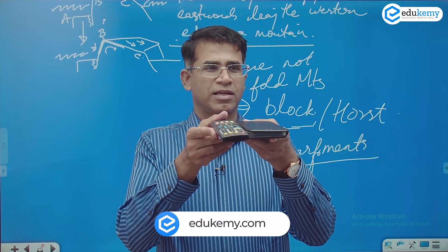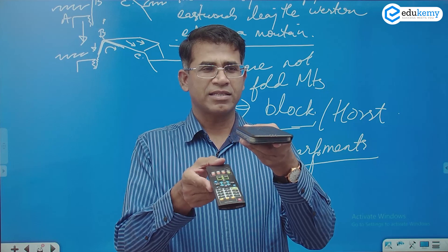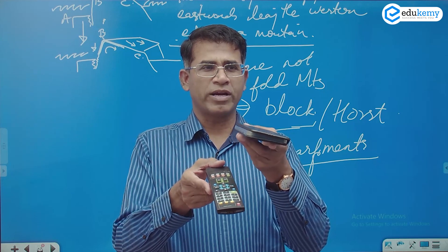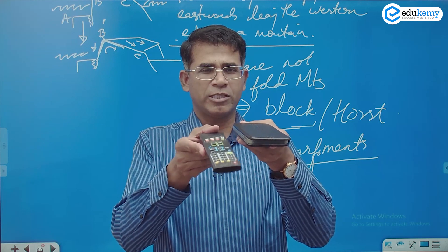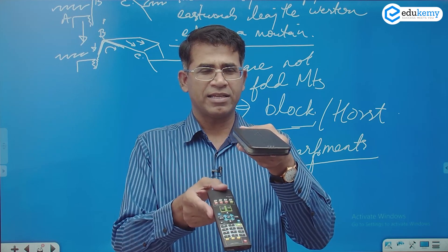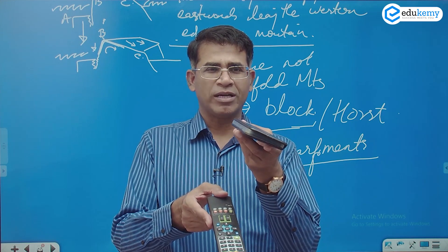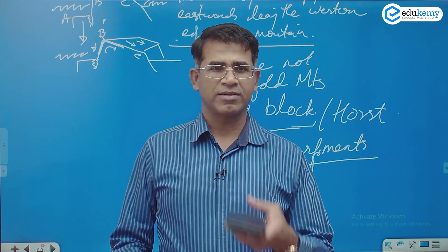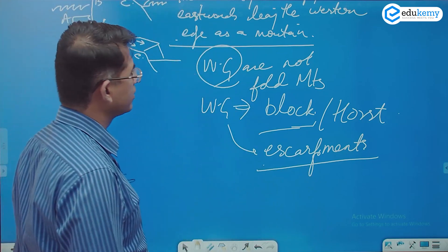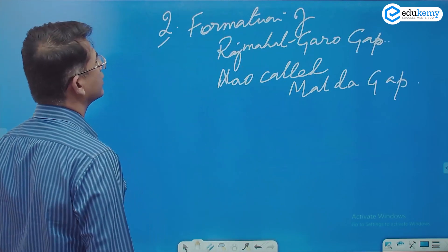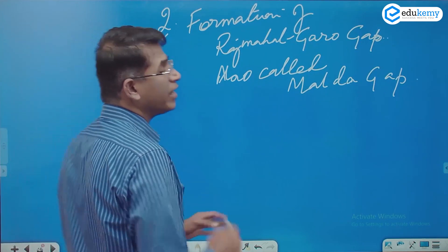The plateau was like this — the western side sank, and this part rotated. The edge becomes more prominent due to this tilting. Next is the formation of the Raj Mahal Gap or the Malda Gap.